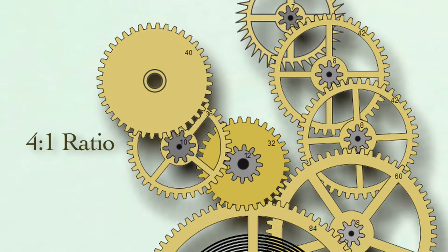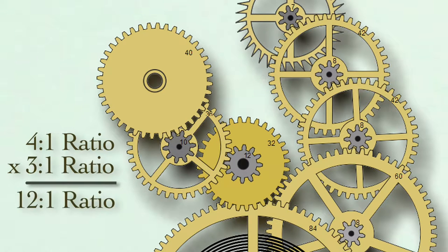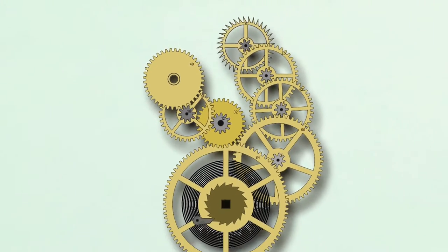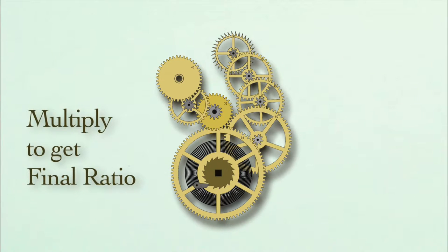To get the total ratio we now multiply the two individual ratios, and the final ratio is 3 times 4, or 12 to 1. The center wheel will make 12 revolutions for each revolution of the hour pipe. Remember, this is true for all gear ratios—you multiply to get the final ratio.